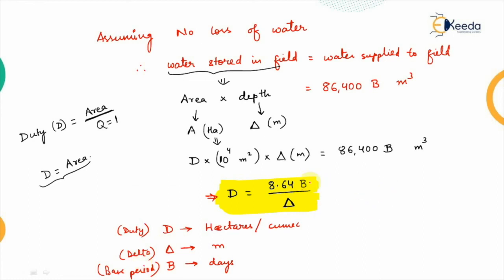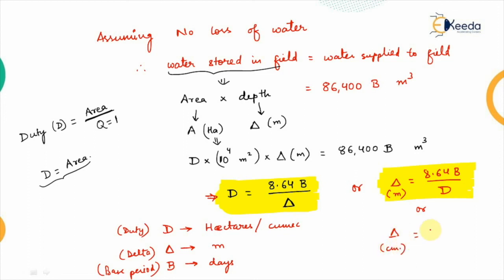There are other relations also derived from this. Depending on the type of unit used, this formula can be rearranged as Δ = 8.64 × B / D, from which we can calculate delta for a particular crop in meters. If we want delta in centimeters, the formulation is multiplied by 100, so the formula becomes 864 × B / D. The formula varies depending on the units we want to use.